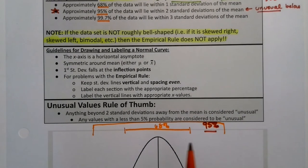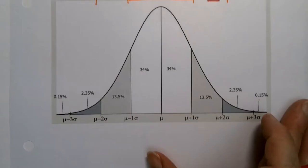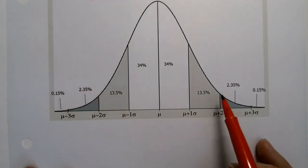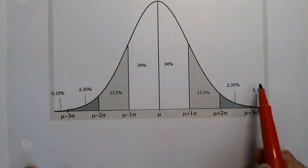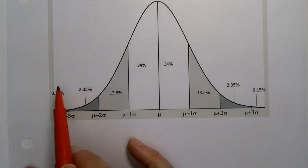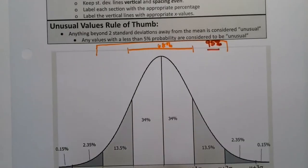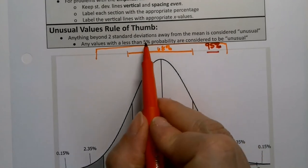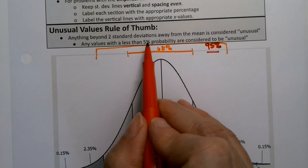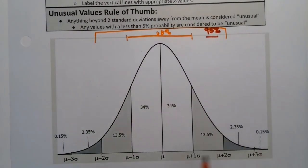So unusual we defined as more than two standard deviations away, which look down here, more than two standard deviations away. Here's two standard deviations way to the left, there's two and a half percent over here. Here's two standard deviations away to the right, there's two and a half percent over here. So two and a half percent plus two and a half percent makes 5%. So being beyond two standard deviations or less than 5% is unusual, because it means you're off in these little bitty tails.